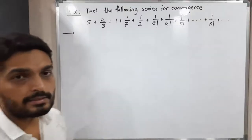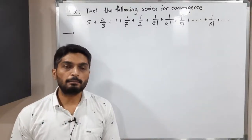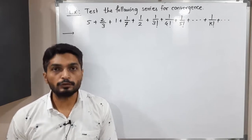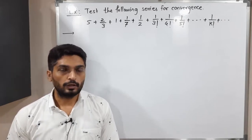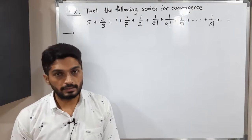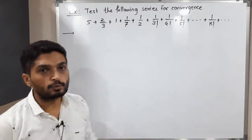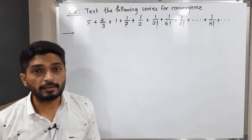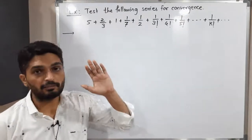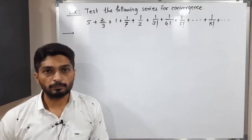Hi everyone, let us discuss this example. We have this series and we have to check whether the series is convergent or not. We will try to find a pattern. In this series we have 5 plus 2/3 plus 1 plus 1/7 plus 1/2 plus 1/3 factorial and so on. Can you find any pattern here?